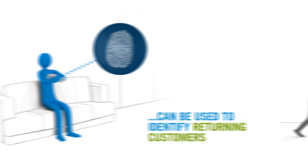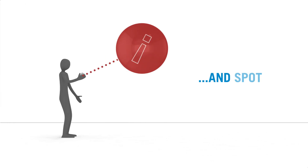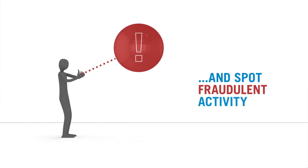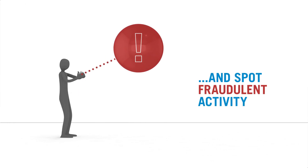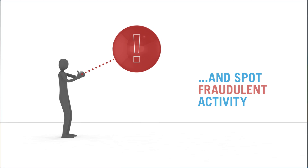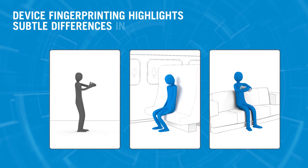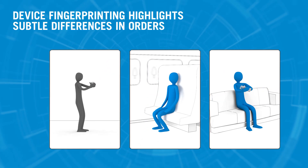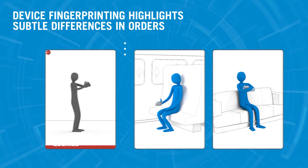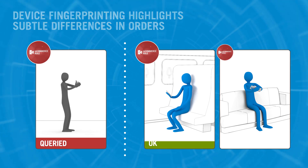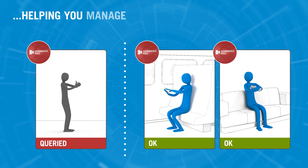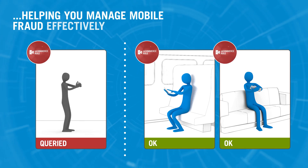Or indicate fraudulent activity if a known device fingerprint is being used with a different account. By using device fingerprinting, merchants can detect these subtle differences in orders, helping them to manage mobile fraud more effectively.